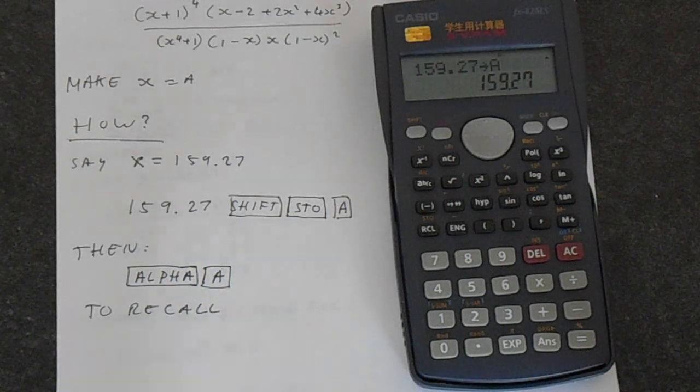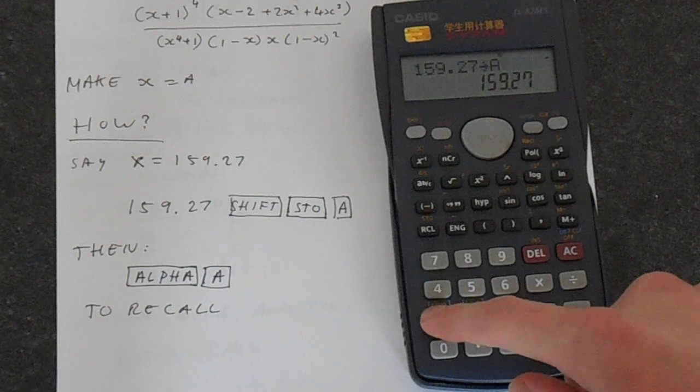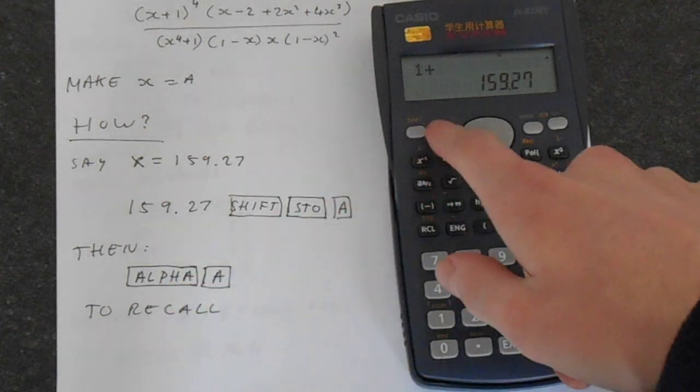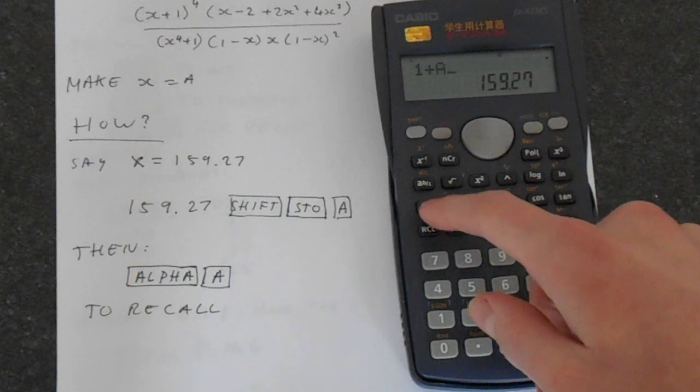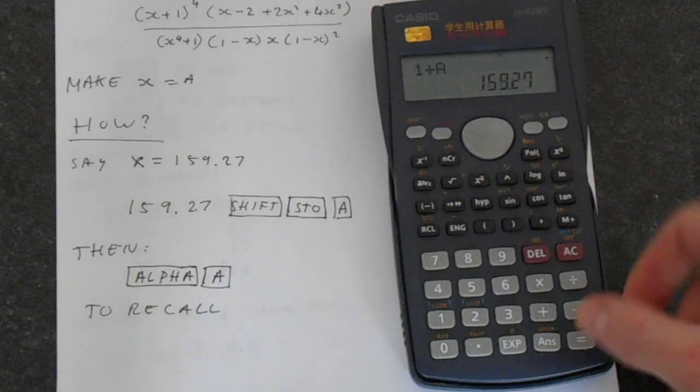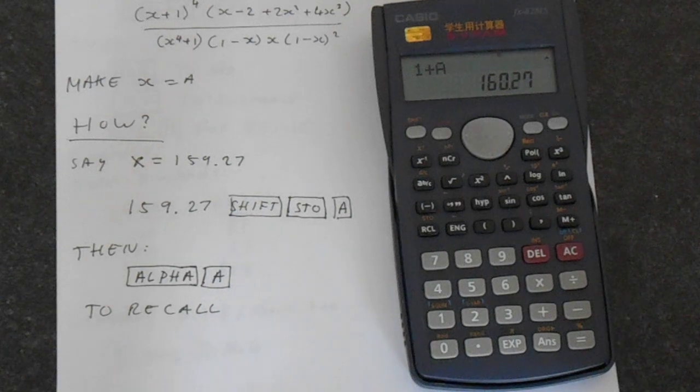If you want to recall this, let's say we want to do 1 plus A. Just put in 1 plus, then use the alpha button. You see alpha is in red, and the variables are in red. Then A, that gets an A on there, and press Enter, or rather equals. That is, of course, 1 plus A.